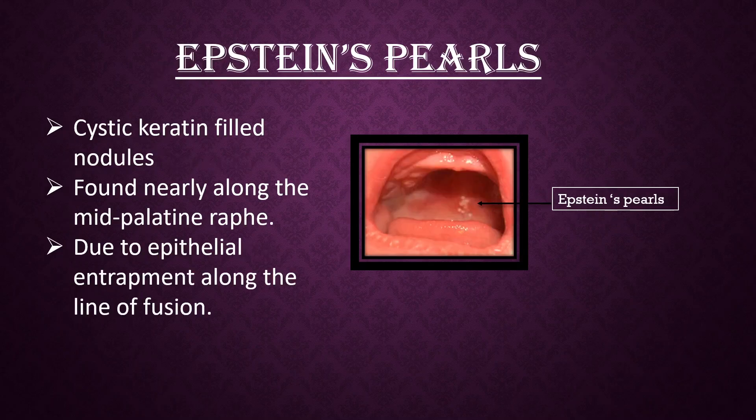Epstein pearls. These are cystic keratin-filled nodules found nearly along the mid-palatal raphe, due to epithelial entrapment along the line of fusion.